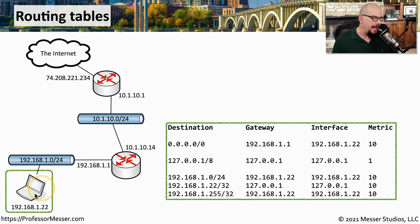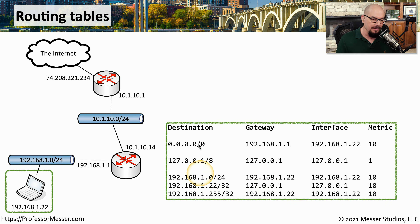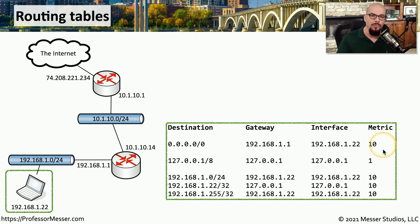Let's look at a network diagram that has a computer, a router, and a second router, and see the differences in routing tables between all three devices. Starting with the laptop, its IP address is 192.168.1.22 on the 192.168.1.0/24 network, with a router interface at 192.168.1.1. The routing table of that laptop shows a number of different destinations, the gateway used to reach each destination, the interface traffic exits on, and a metric value that ranks those routes.